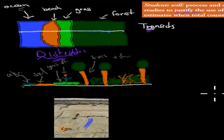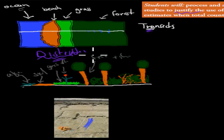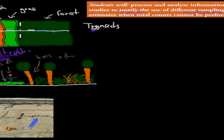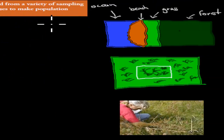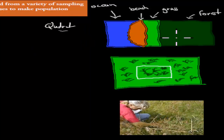A transect is not great for measuring abundance, because it's just one line and doesn't cover any area. So to measure abundance, we use something called a quadrant.